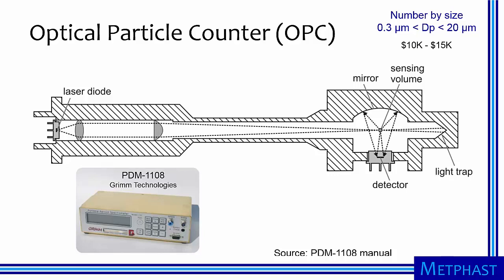Optical particle counters provide number concentration of particles by size, typically from 300 nanometers to 20 micrometers. Here I show the optical configuration of the Grimm Particle Dust Monitor 1108.